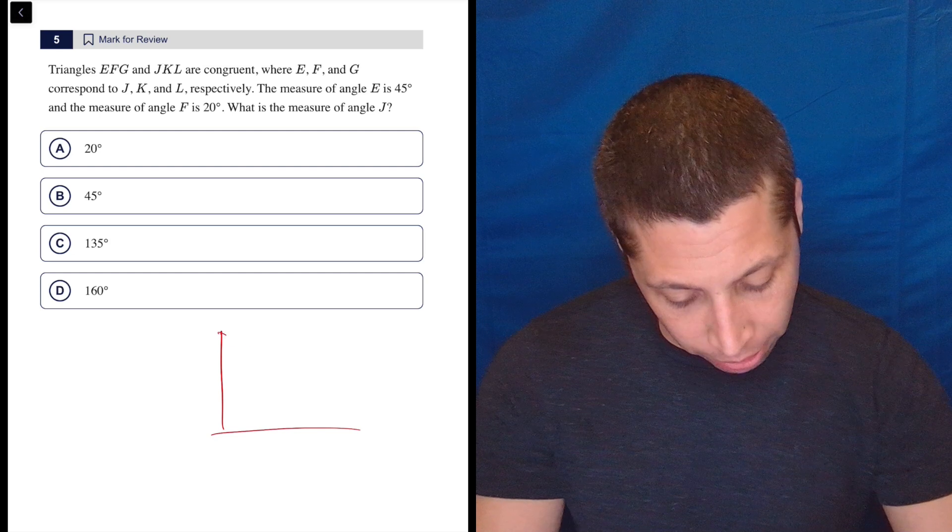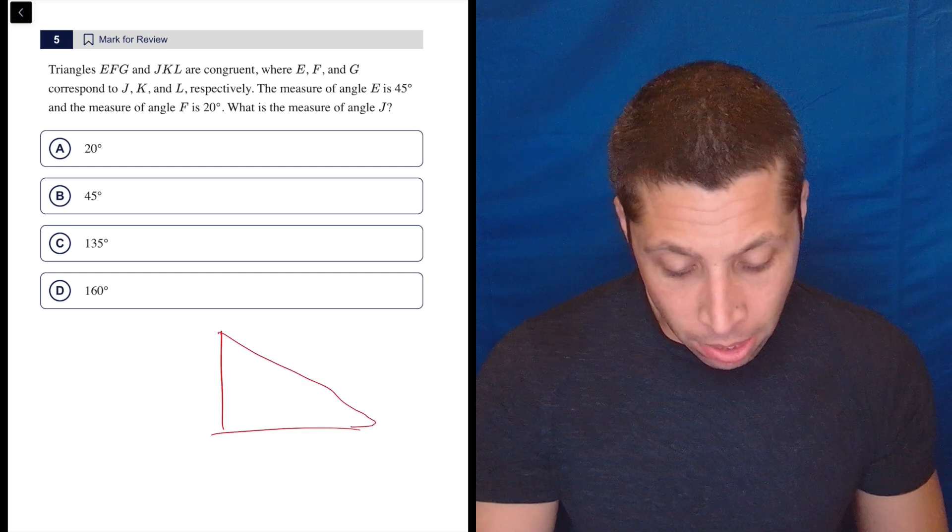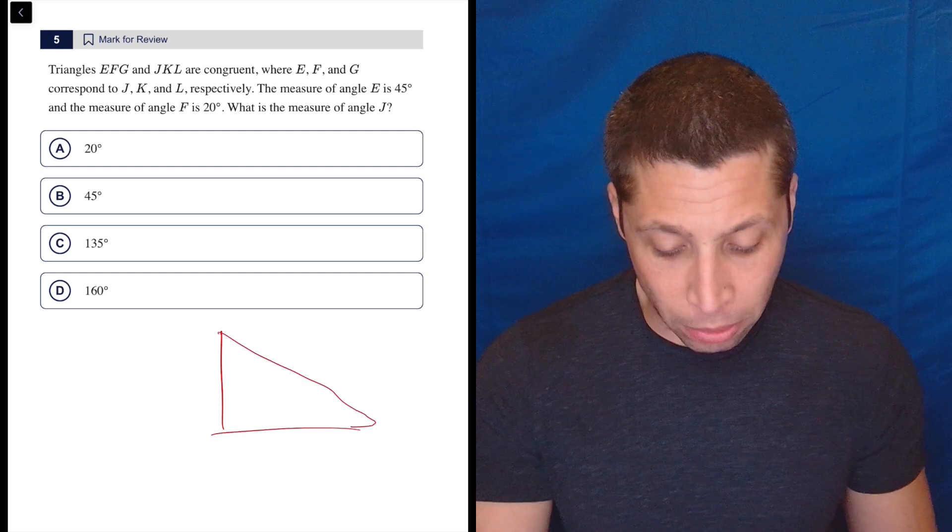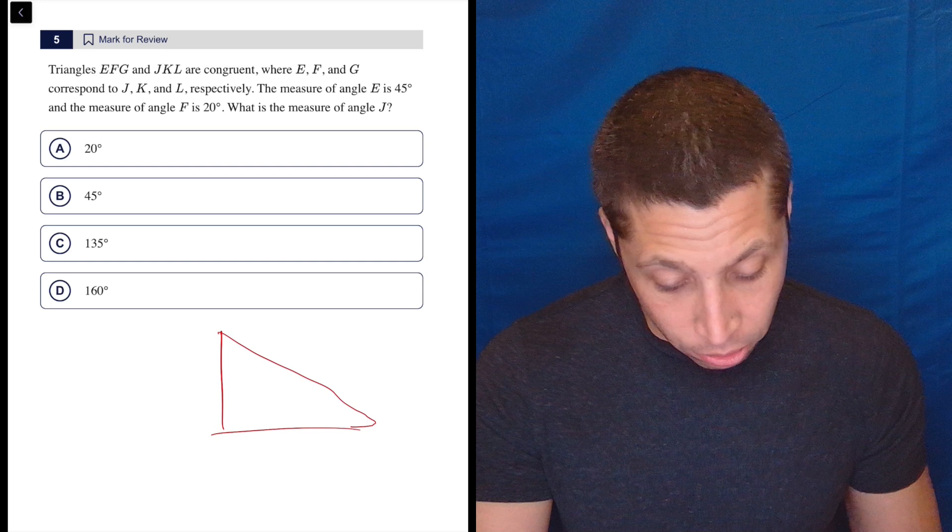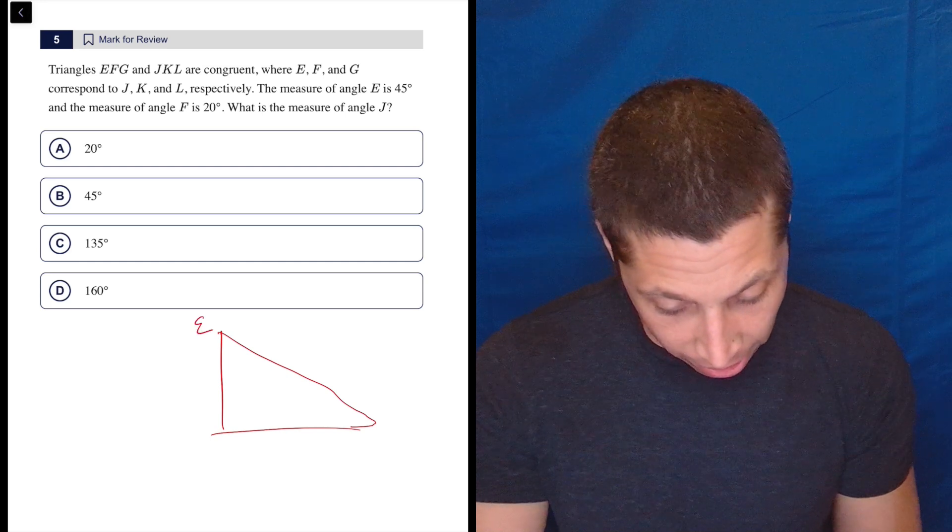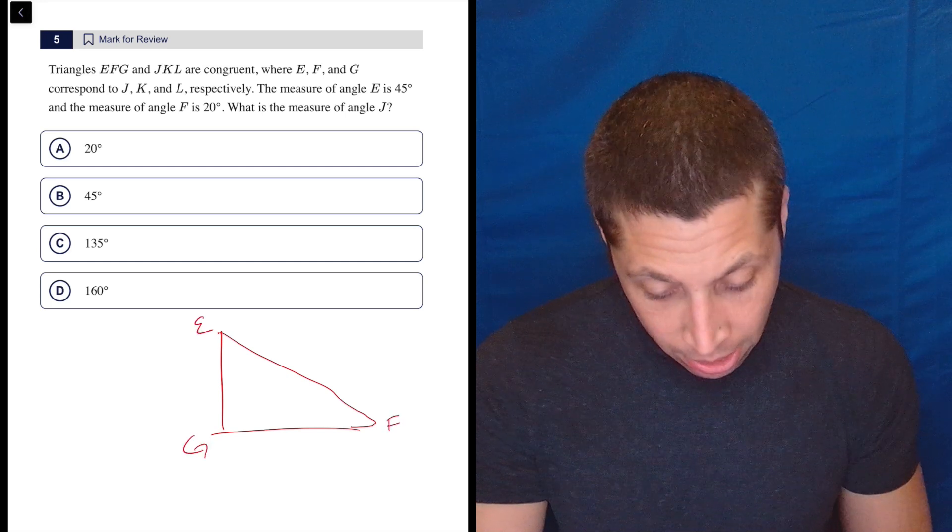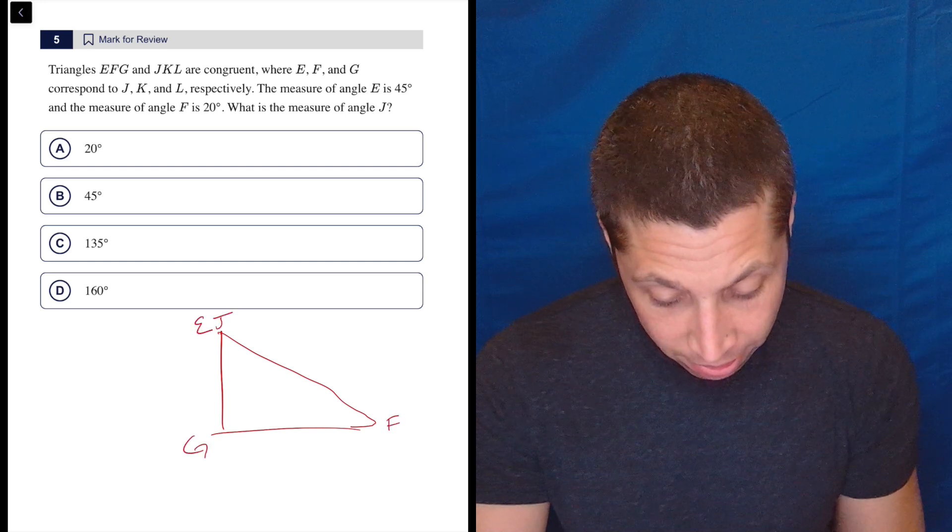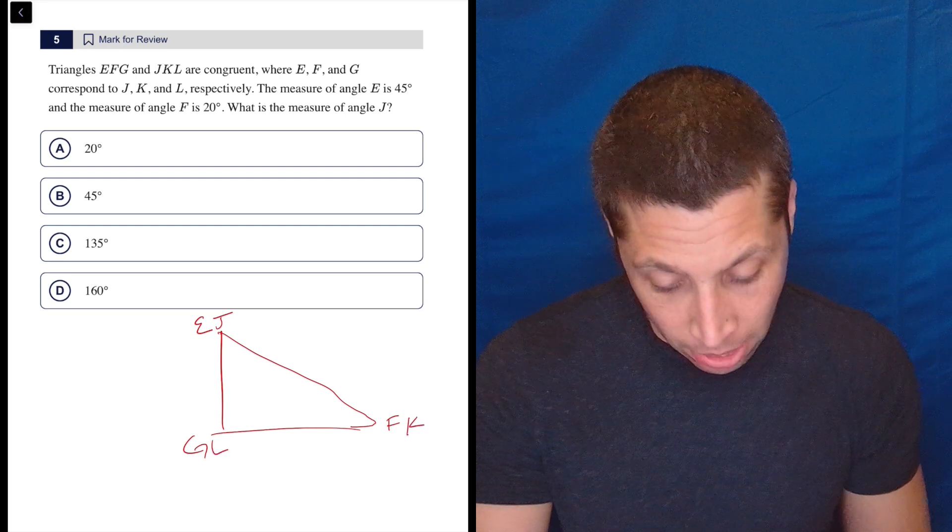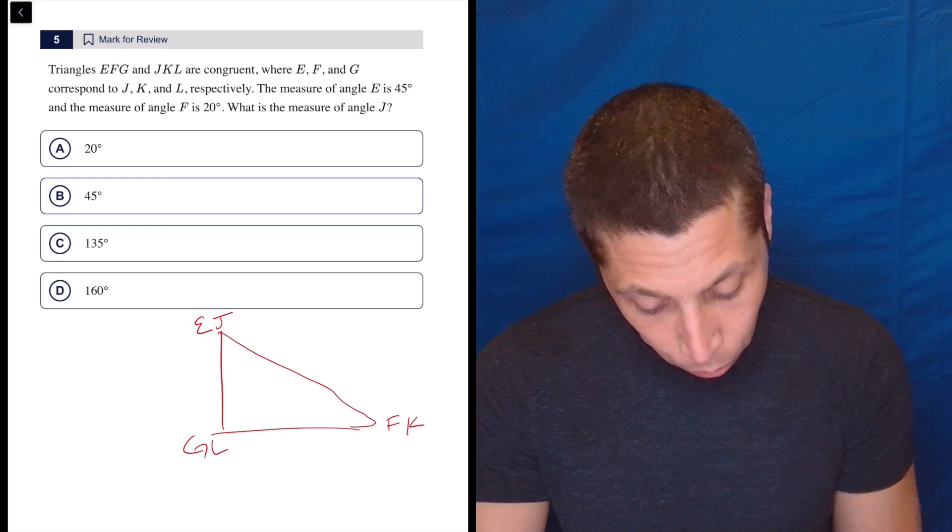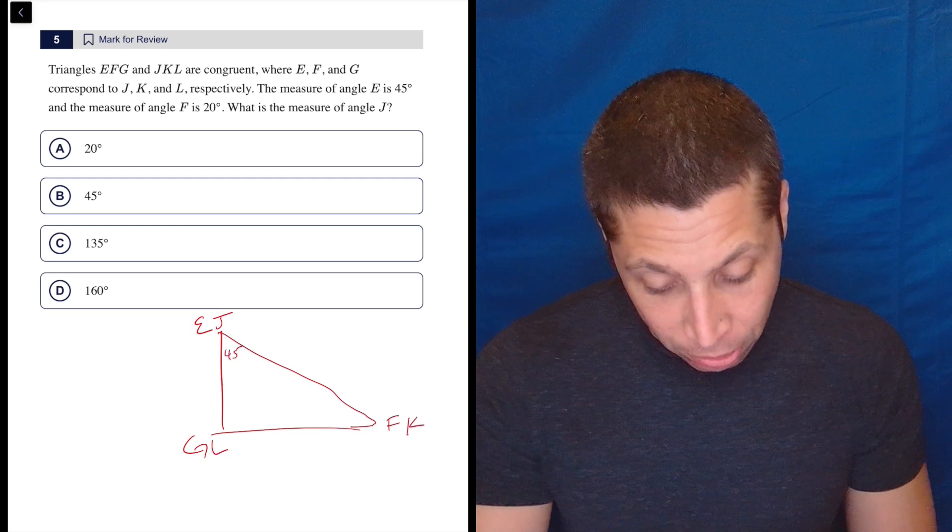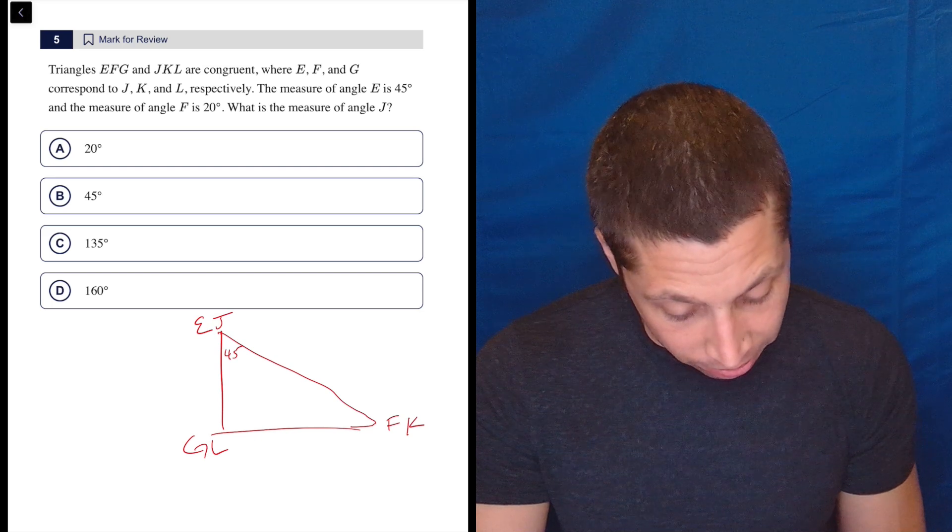So I tend to draw right triangles, but it doesn't have to be one. We have EFG and it corresponds to JKL respectively. So, EFG and then JKL, the measure of angle E is 45. So that's up here. And the measure of angle F is 20 degrees. That's down here.